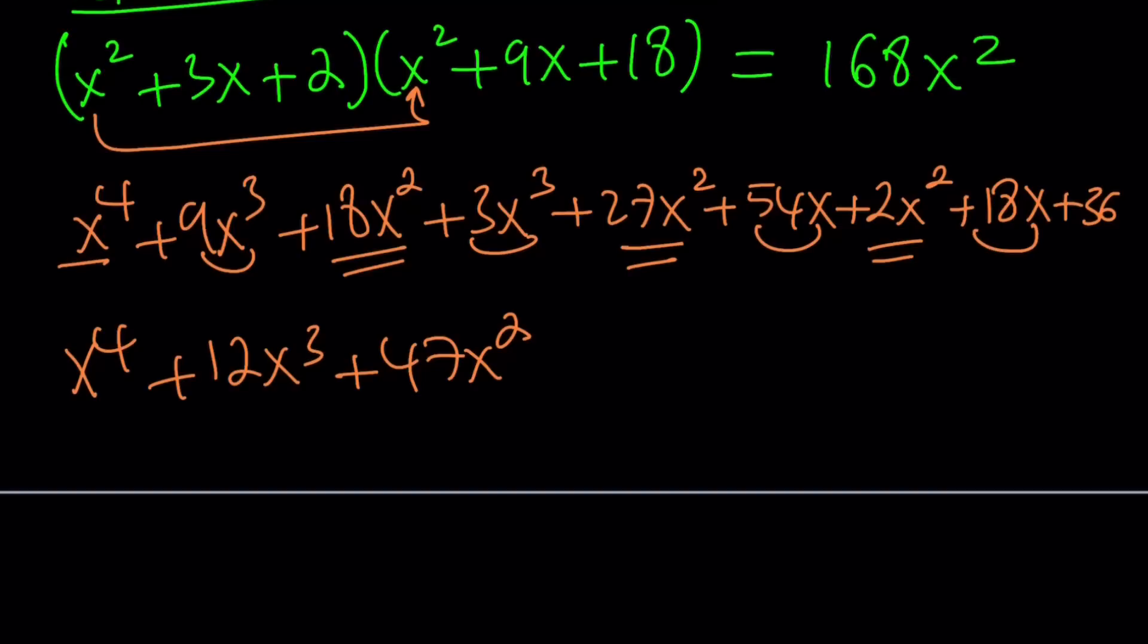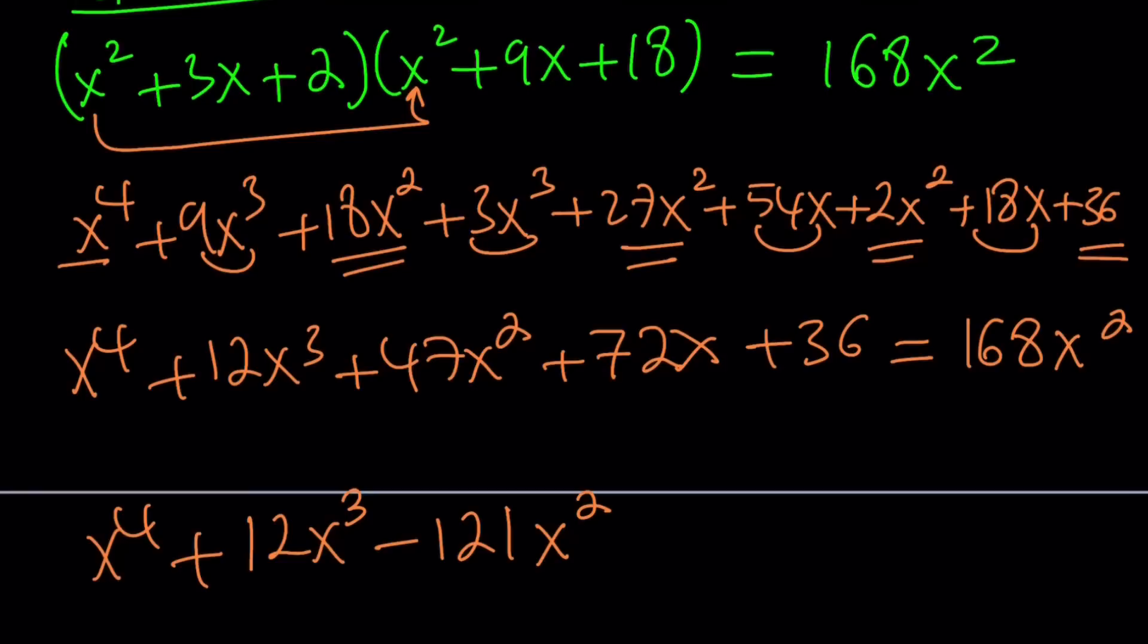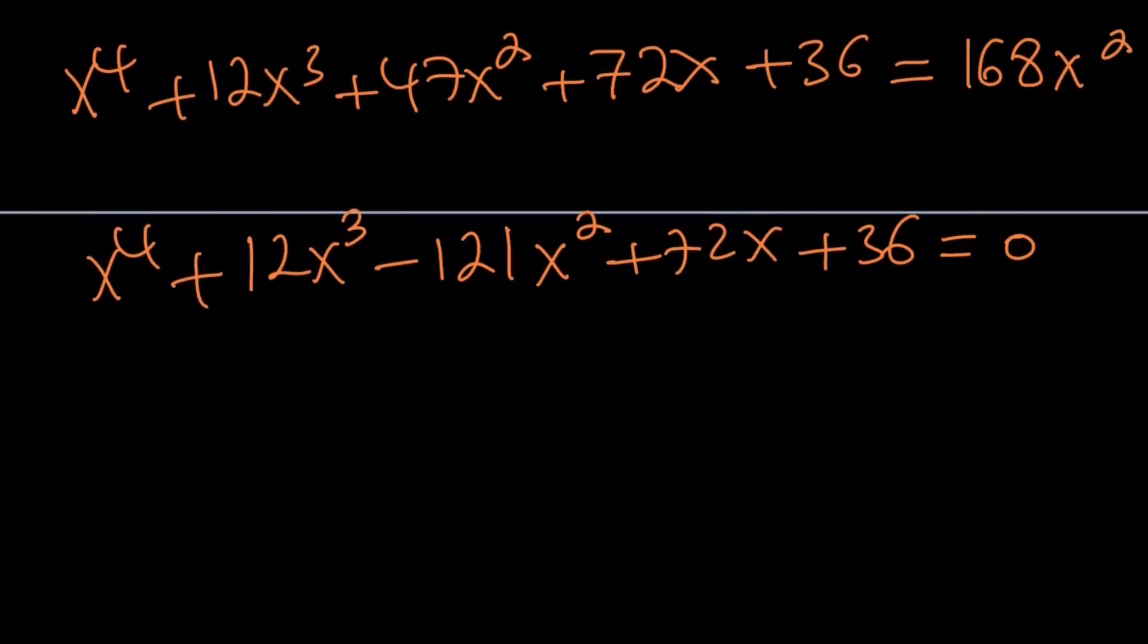And then we have 54x plus 18x, which is 72x, and finally we have our constant, and the whole thing is equal to 168x squared. We're going to subtract it from this number and we're going to get our quartic. When you subtract, you're going to get a negative answer. 168 minus 47 is 121, but that's going to be negative because we're subtracting a larger number, then plus 72x plus 36. Some of these numbers are multiples of 12. 121 is 11 squared, so on and so forth. Is that a special scenario? Probably. But this is a quartic equation.